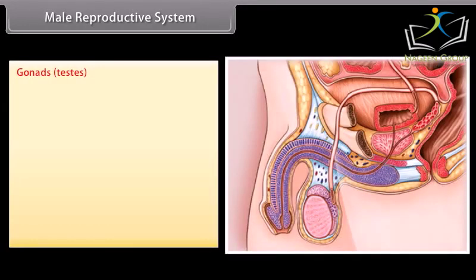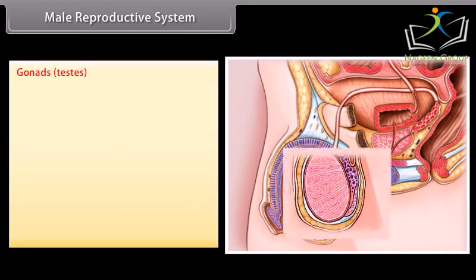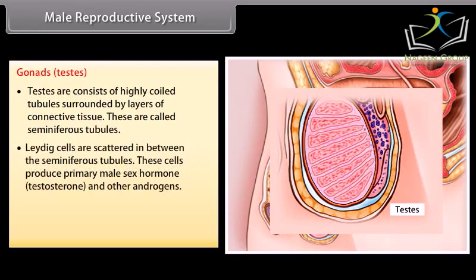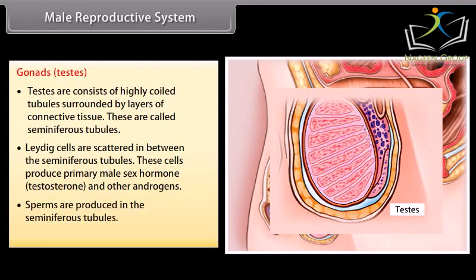The testes consist of highly coiled tubules surrounded by layers of connective tissue, called seminiferous tubules. Leydig cells are scattered in between the seminiferous tubules. These cells produce the primary male sex hormone testosterone and other androgens. Sperms are produced in the seminiferous tubules.